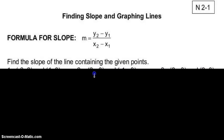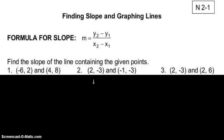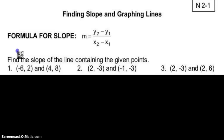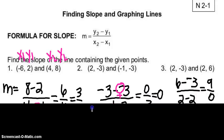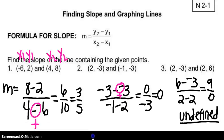Let's work a few examples. Problem number 1 says we're going to find the slope of the line containing the given points: negative 6, 2 and 4, 8. Label your X1, Y1, X2, and Y2. I should have 8 minus 2 divided by 4 minus negative 6. Minus a negative means I'm actually adding — it changes to a plus sign. So I get 6 divided by 10, and then I reduce to get 3 fifths.